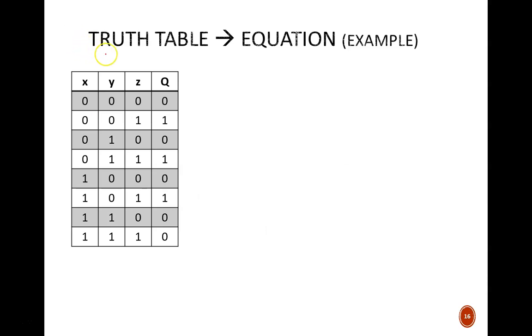This example shows an arbitrary three-input truth table. Our goal is to write this as the simplest possible SOP equation. So we identify the rows where q equals 1 and use those to write the canonical SOP equation. For example, row 001 provides the min term x prime y prime z. Three ones lead to three min terms.